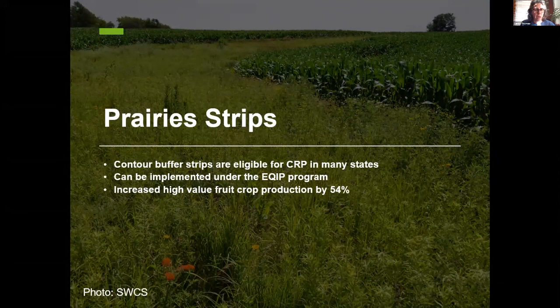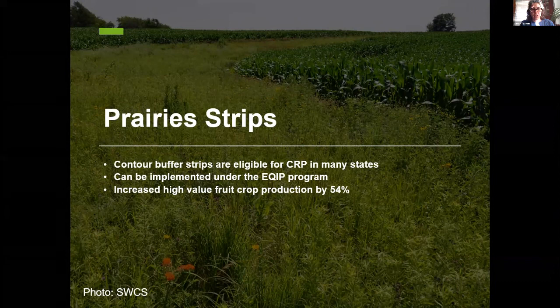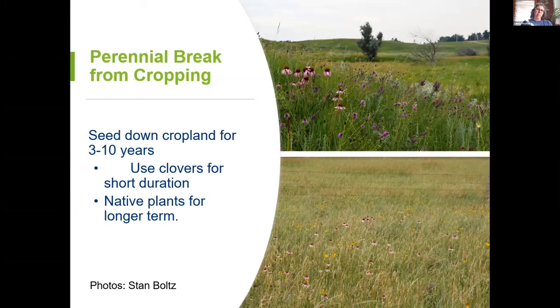These prairie strips or contour buffer strips can be eligible for CRP in many states — a program that started at Iowa State with Lisa Schulte Moore, who has done a super job expanding them across Iowa. They can also be implemented in the EQIP program. As that blueberry scenario showed, in a high-value cropping system they can increase fruit crop production by 54% just by having these pollinator insectaries adjacent to high-value crops.